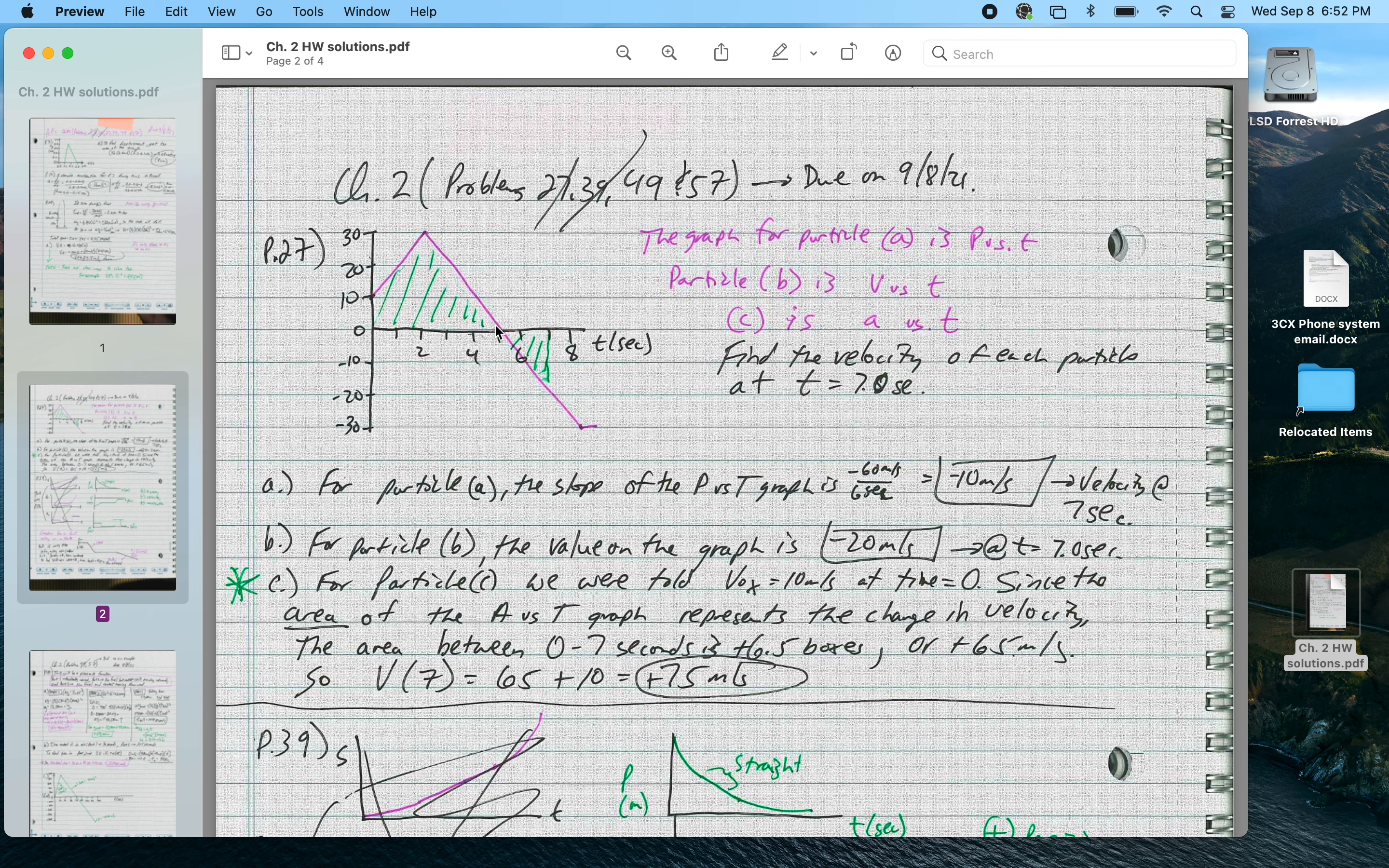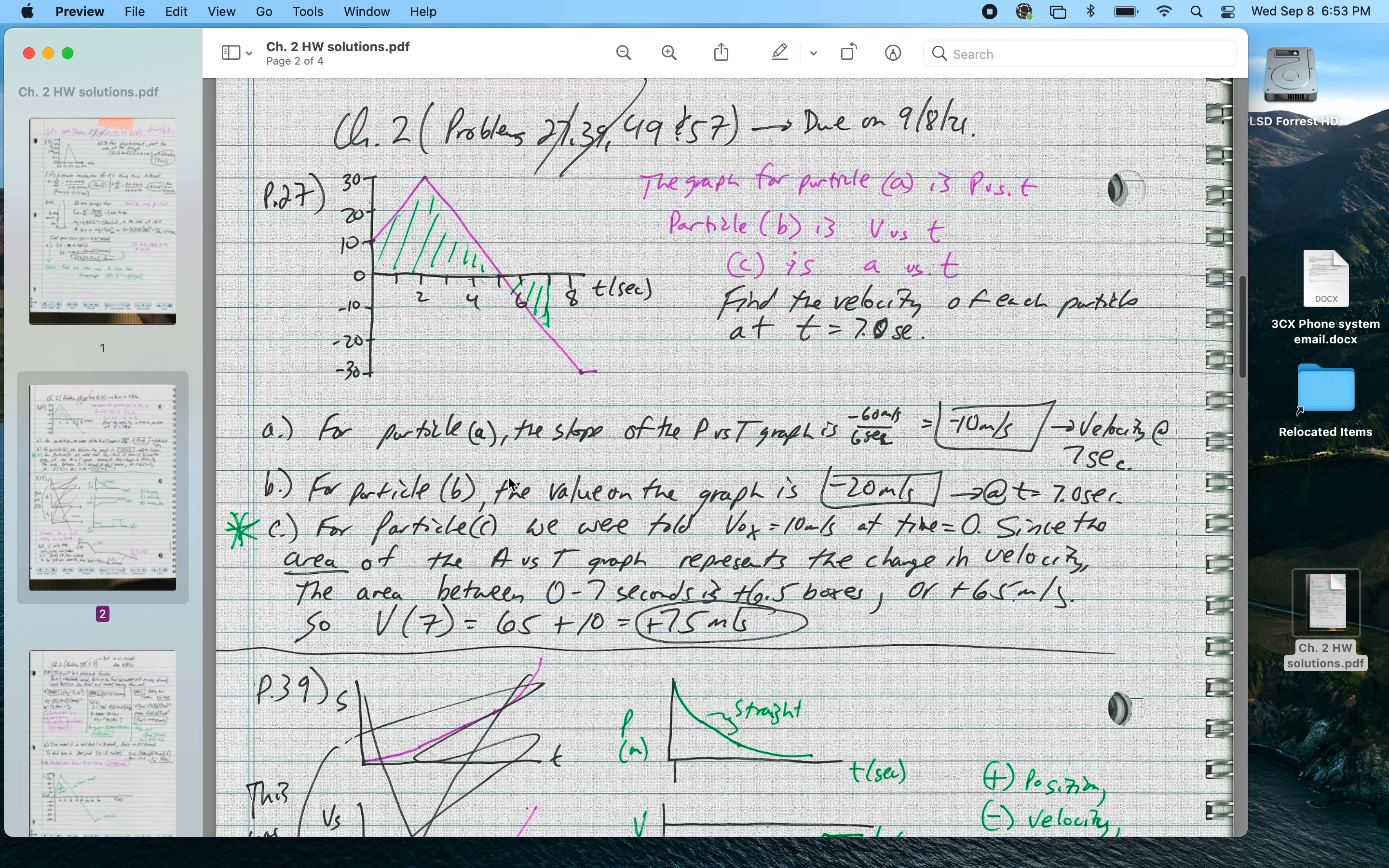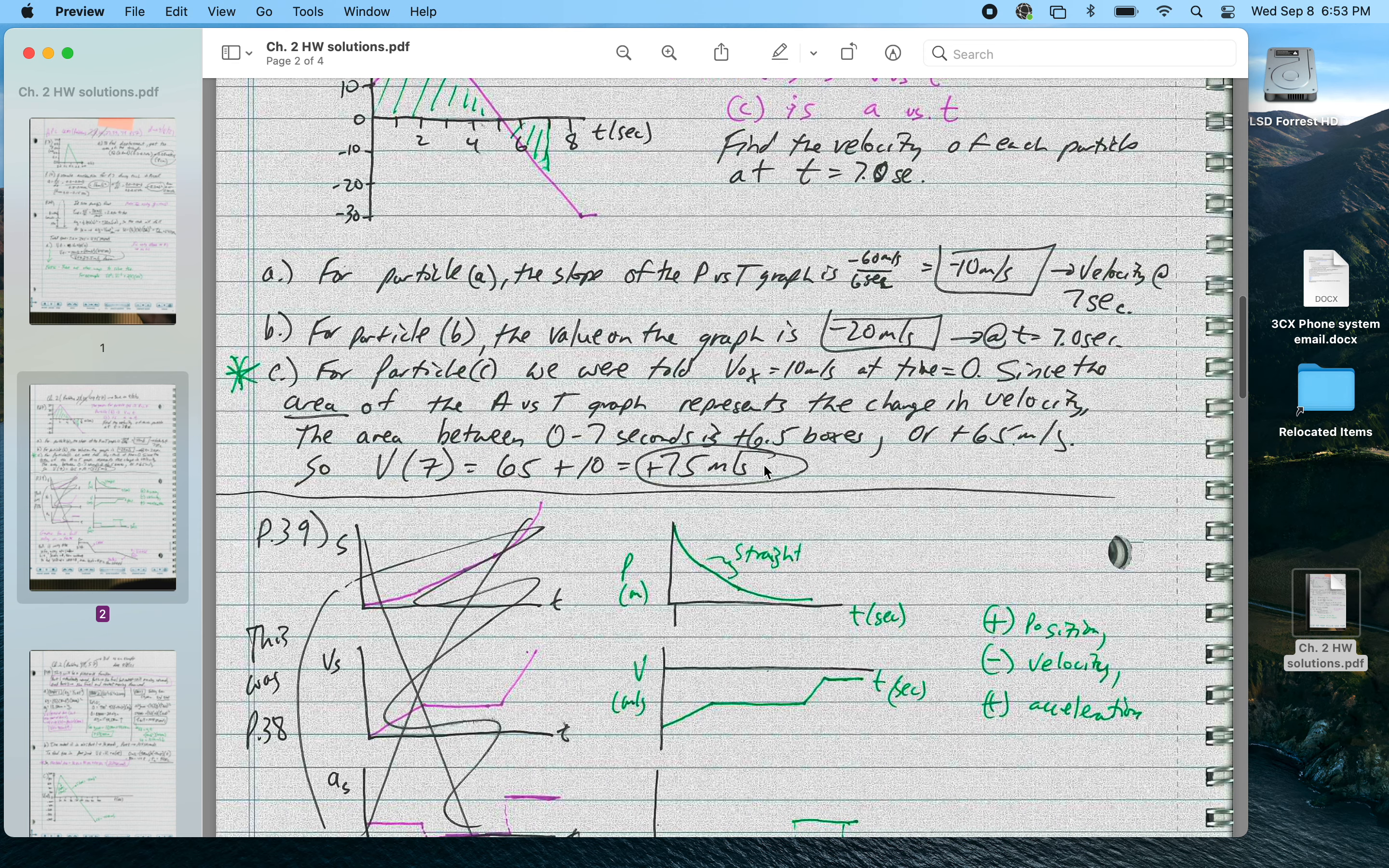And then the area from 0 to 7 seconds tells us the change in velocity, and that's plus 65 meters per second. I talked about how I could use some symmetry between 5 and 7 seconds and then 3 and 5 seconds, so that really the net area I'm interested in is the area between 0 and 3 seconds. And that gives me a total velocity at 7 seconds for the acceleration graph that would be 75 meters per second.